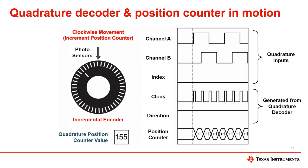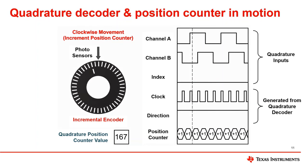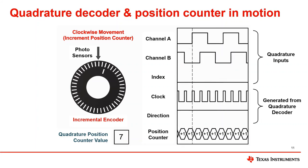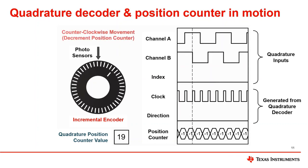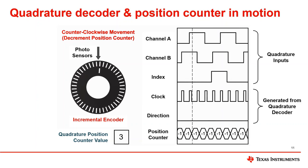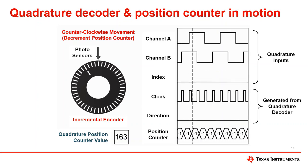Now let us look at the quadrature decoder and position counter in tandem by monitoring a more detailed version of the quadrature animations seen before. The current value of the position counter can be seen in the bottom left. On the right, you can see the three quadrature inputs, the generated quadrature clock and direction signals, and the position counter, which operates at four times the frequency of the input signals. The encoder has 44 slots, meaning the maximum position is 4 × 44 − 1 = 175. The position counter continually increments as the encoder rotates clockwise and resets to zero on the index pulse. As the encoder stops, all pulses remain static at their last defined position. The quadrature direction signal drops low as the encoder rotates counterclockwise and the position counter begins to decrement. The index signal occurs and the counter is brought back to the maximum position value.